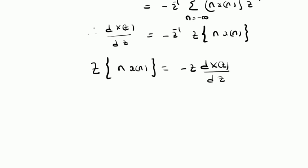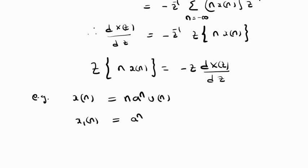Now let us look at an example which utilizes this property. In this example, our goal is to find the Z transform of the sequence X of n defined as n times a power n times u of n. We want to find the Z transform using the differentiation property. For this purpose, let us define a sequence X1 of n as a power n times u of n.